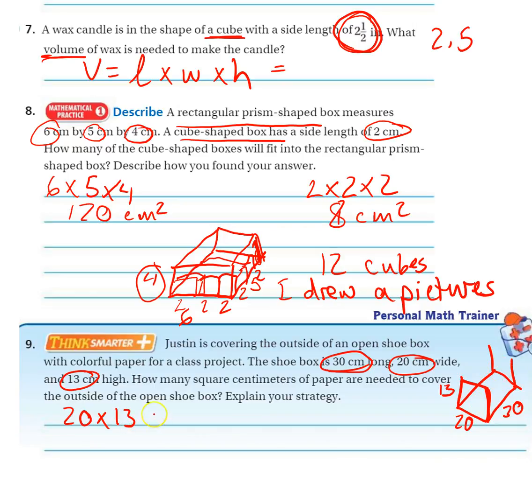So this side of the box will be 20 by 13. And then since there's a front and a back, we times that by 2.